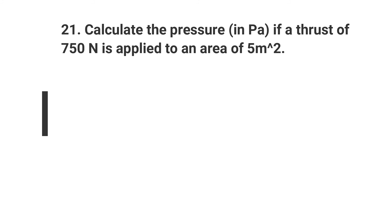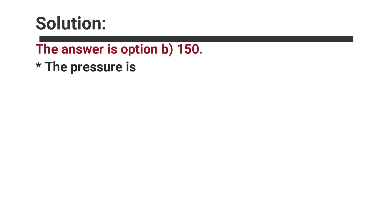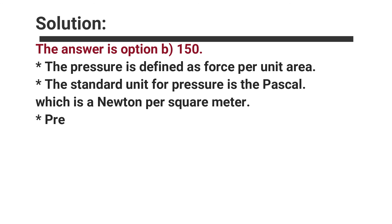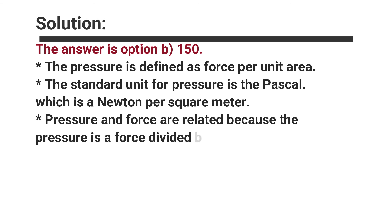Question number twenty-one: Calculate the pressure in Pascals if a thrust of 750 Newtons is applied to an area of 5 square metres. Options are A. 37.5, B. 150, C. 75, D. 100. The answer is option B, 150. Pressure is defined as force per unit area. The standard unit for pressure is the Pascal, which is a Newton per square metre. Pressure can be calculated by the formula P = F ÷ A, giving 750 ÷ 5 = 150 Pascals.